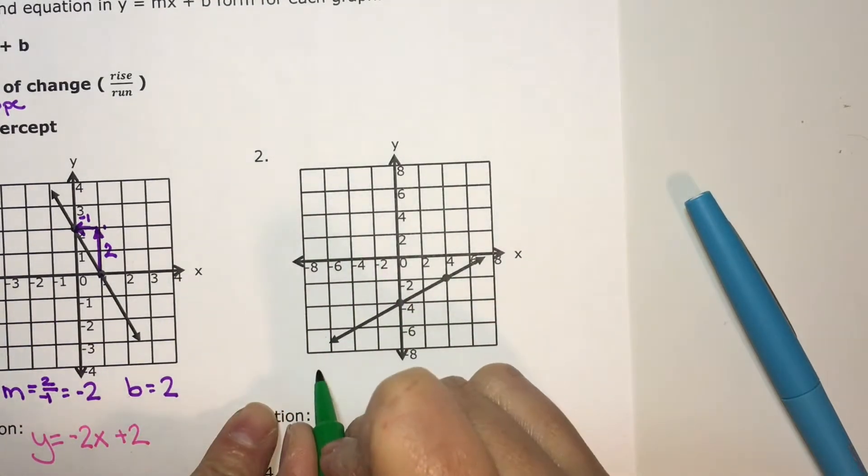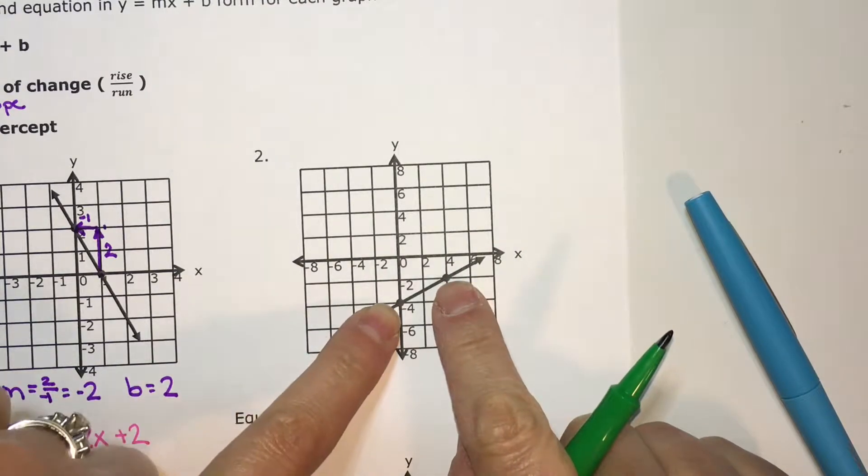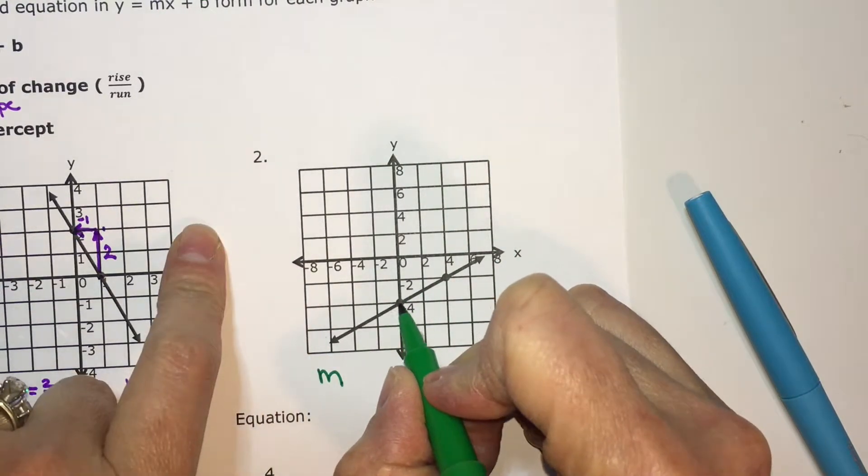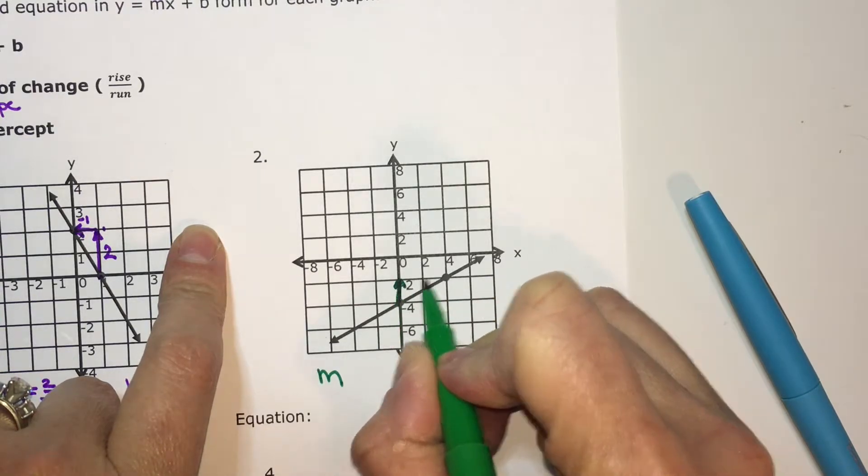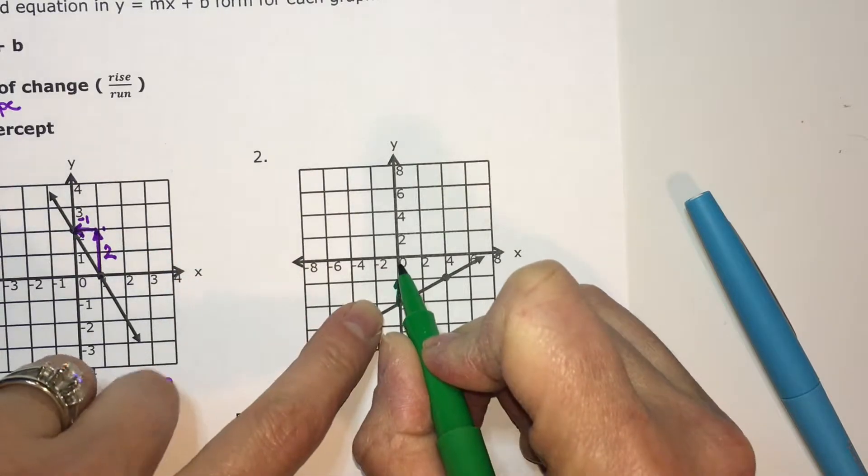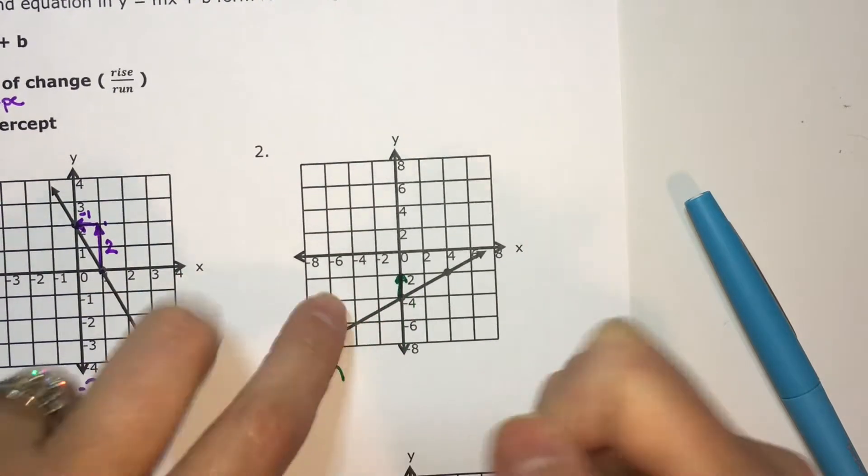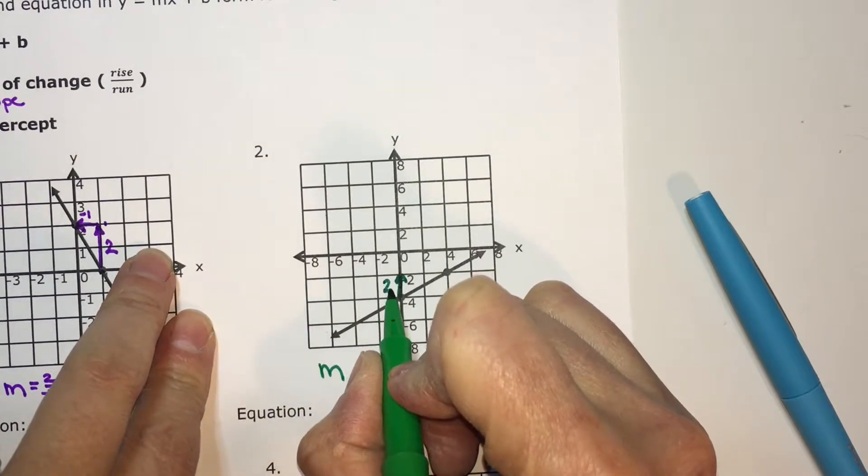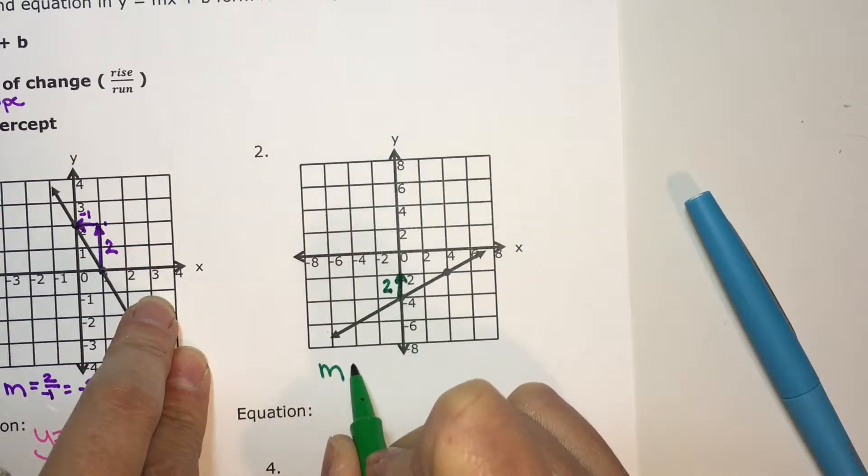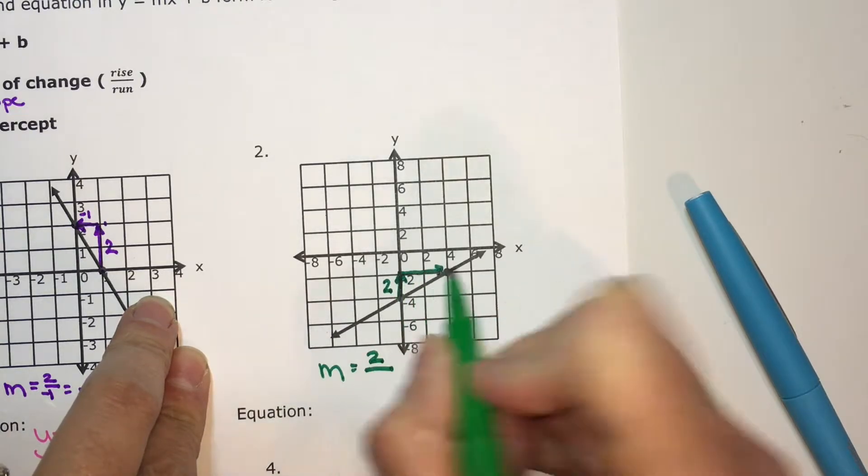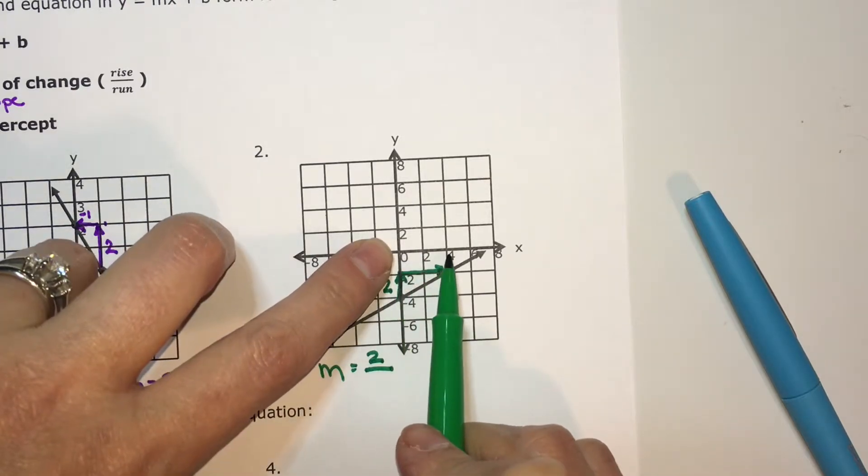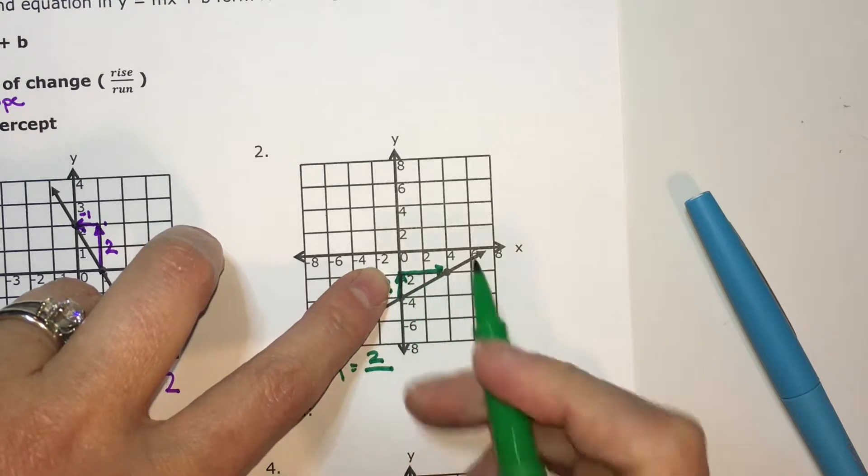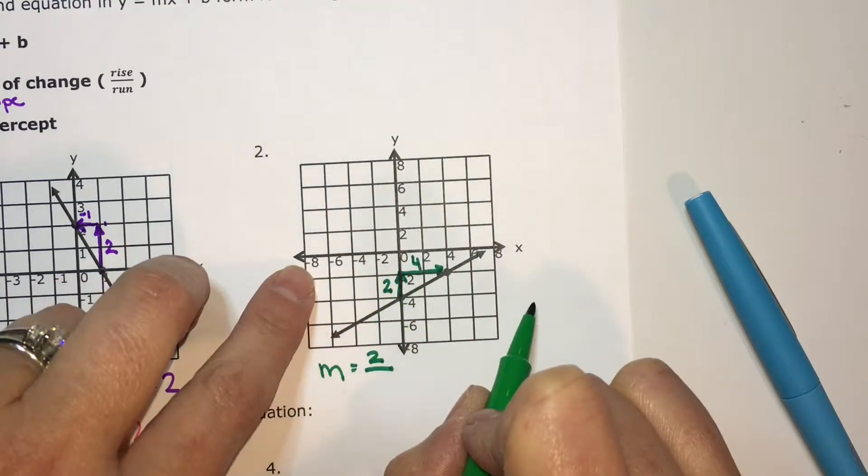Again, to find the slope, do rise over run. Here are two points. I always start at the bottom one so I can rise up until I'm straight across from my other point. I went up one box, but if you look at this graph, each box is worth two, so my rise was actually two because I went from negative four to negative two. Now I'm going to run over to my other point. I run two boxes, but again, each box is worth two, so I run two, four, and I ran towards positive, so it is positive.